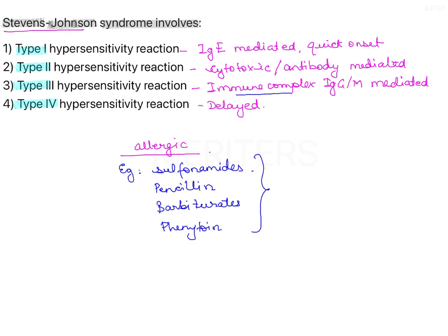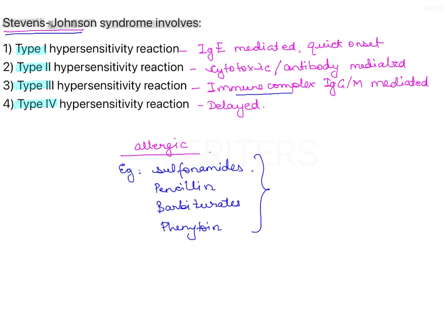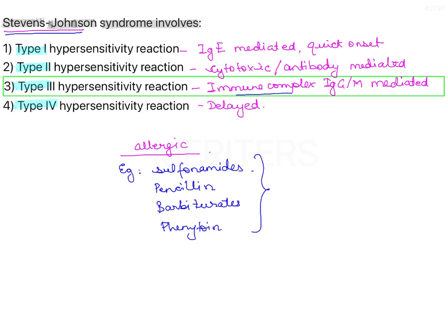As for what Stevens-Johnson syndrome is — a few symptoms you need to know are the ulcerations and mainly the target lesions. There is soreness in the mouth, ulcers, target lesions on the skin, and swelling. In very severe forms, it can get very difficult to manage the patient. So the correct answer is option number 3 — type 3 hypersensitivity reaction.